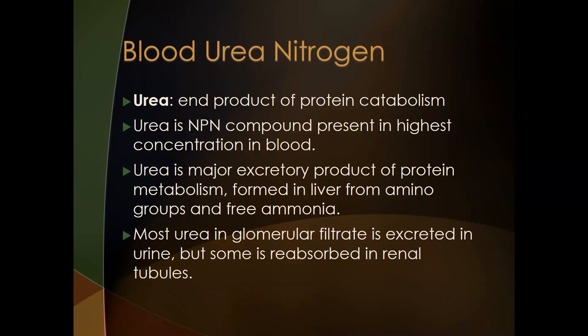Urea is the major excretory product of protein metabolism — the waste product of protein metabolism. It is made in the liver from amino groups (amino acids are the building blocks of proteins) and from free ammonia. The ammonia comes from the nitrogenous group that is part of amino acids.